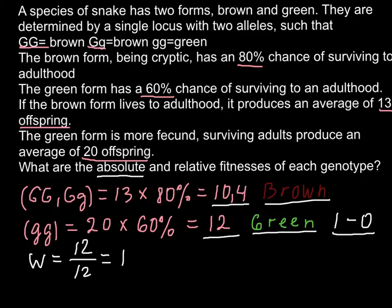And this would also be easy. So the relative fitness, by the way, we have used little g, little g here, and here would be the relative fitness of the homozygous dominant and heterozygous genotypes.